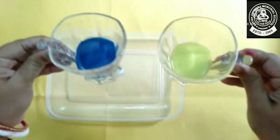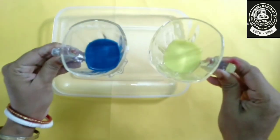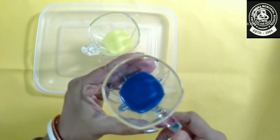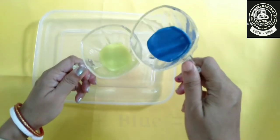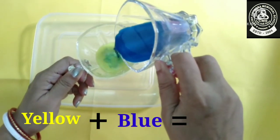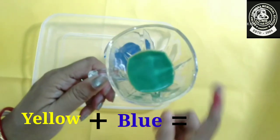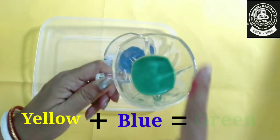Here we have our first two primary colors, blue and yellow. Now let's mix these two colors. Mix slowly. What did you observe? Wow, this is green.